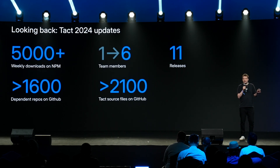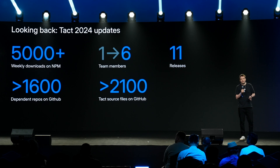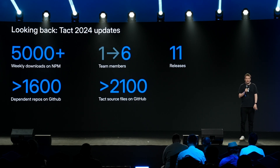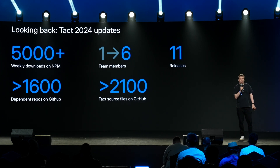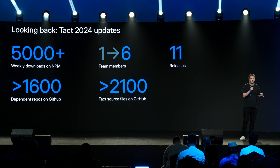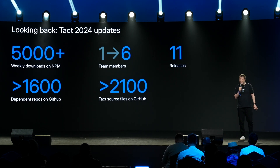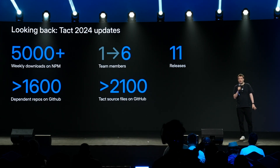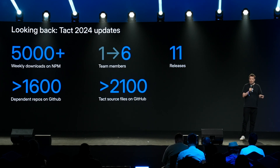Looking back, TACT is a young language but it's been around for a while. The 2024 TACT updates: we have more than 5,000 weekly downloads on NPM where the TACT compiler is published, more than 1,600 repositories on GitHub with more than 2,000 files already deployed. We made 11 releases including four major ones during the past year. Most importantly, we grew the TACT team from just me joining a year ago at TON Foundation to six people working full-time on the TACT compiler and its development tools — and that's our greatest asset.